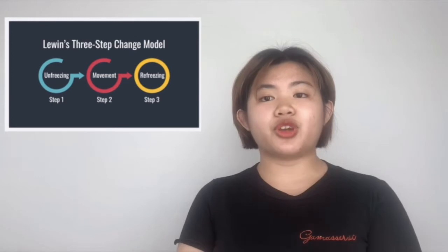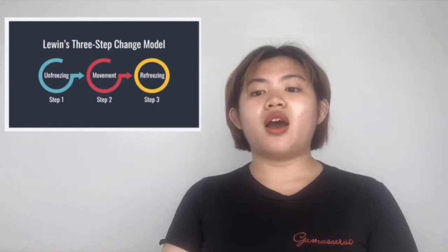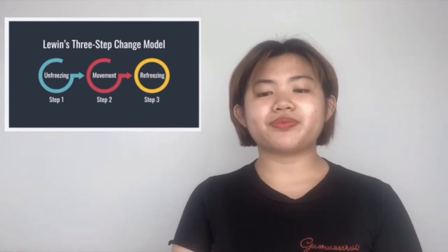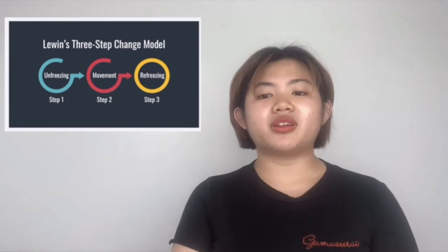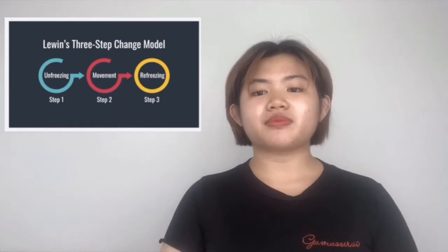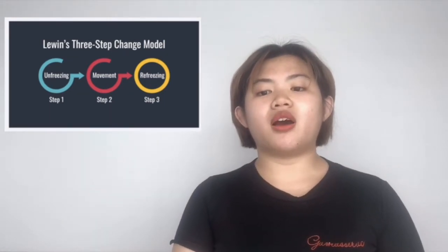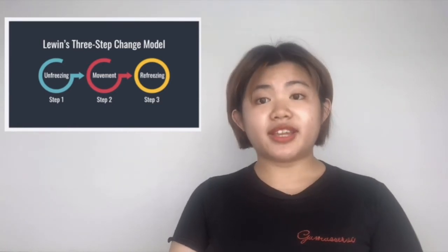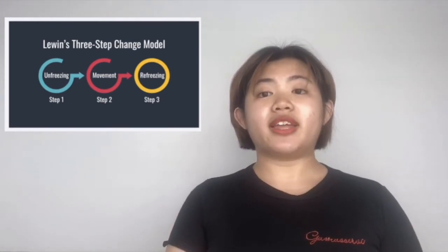Lewin's 3-step model of change provides cues in the context of the social behavior of change at an individual and collective level within a group. Since the theory was first introduced in 1951, change management has taken both supportive and opposing directions. This is a vital reminder when modern-day change management frameworks are not working from specific use cases and business needs — consider these as fundamentals of understanding social behavior in the context of change.